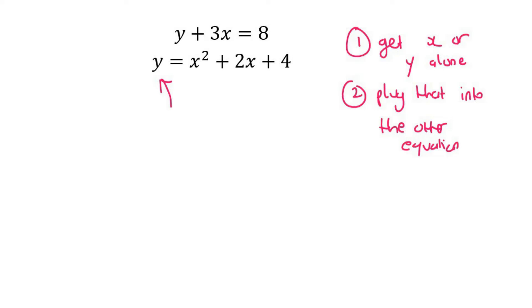Okay, so if for example we call this top one equation one and we call this equation two. Let me rather call this a and b just to not cause any confusion here. Okay, so what we did is we got x or y alone. So we got this alone. Now we put that into the other equation.